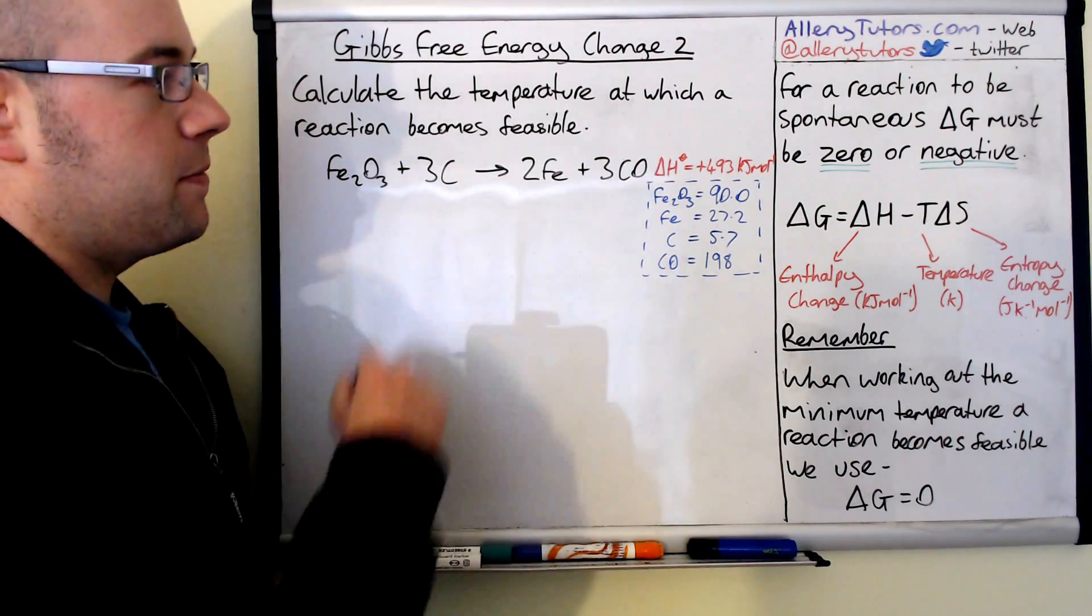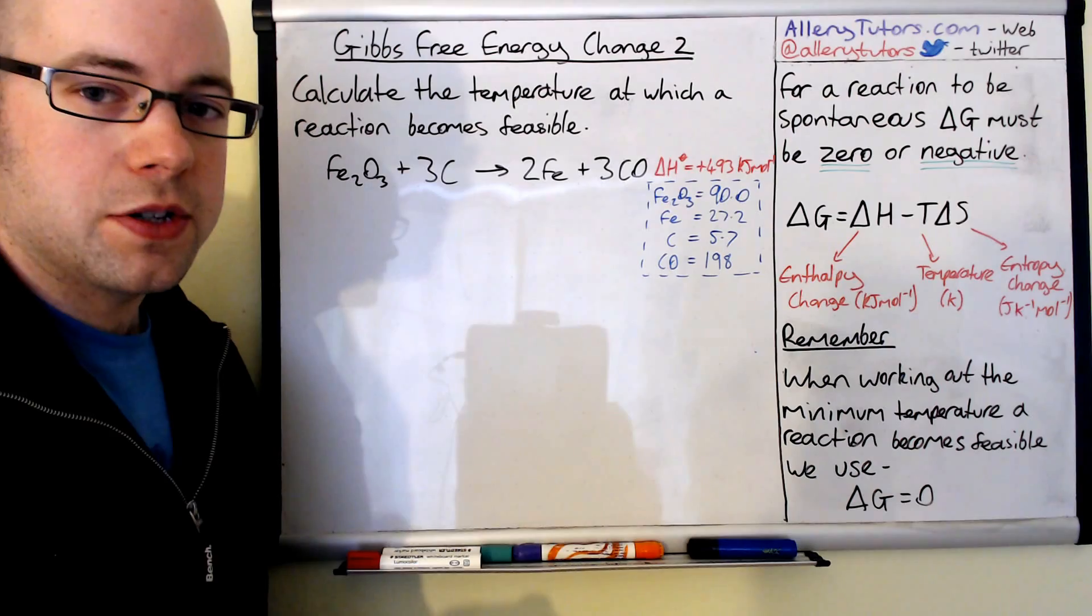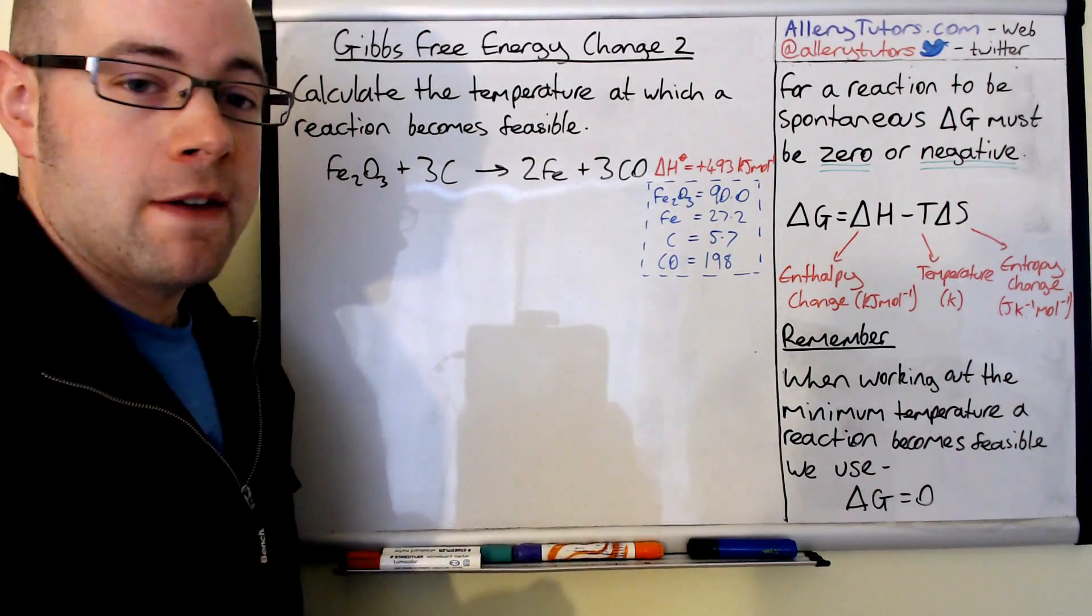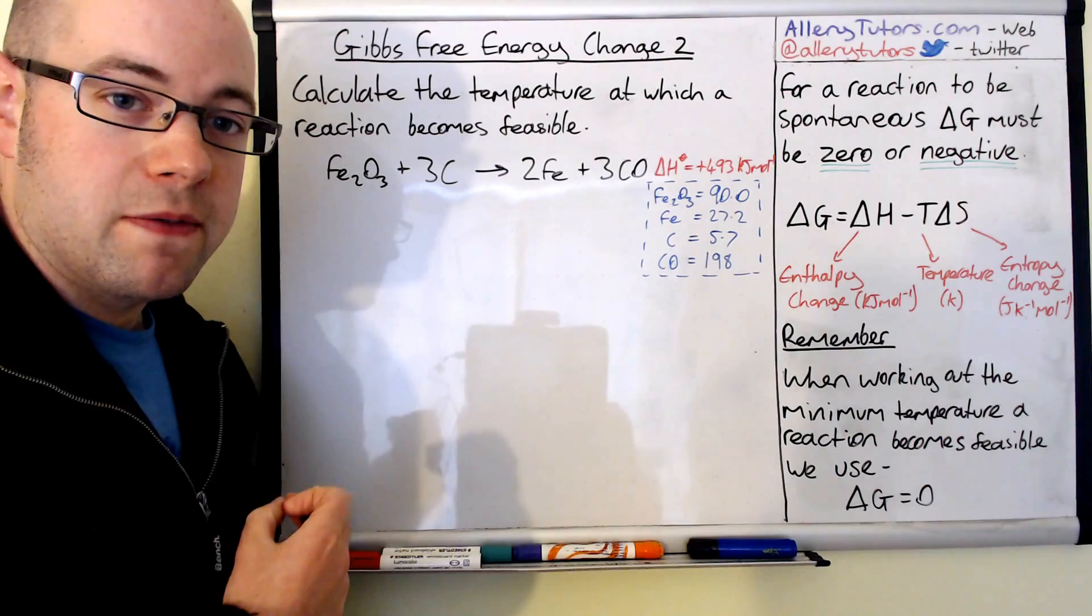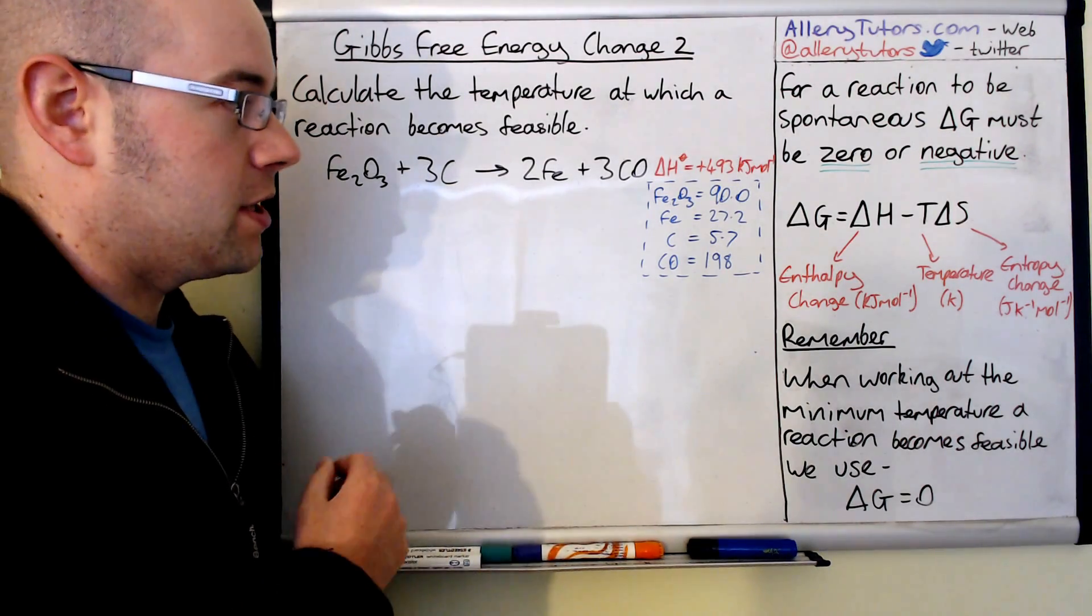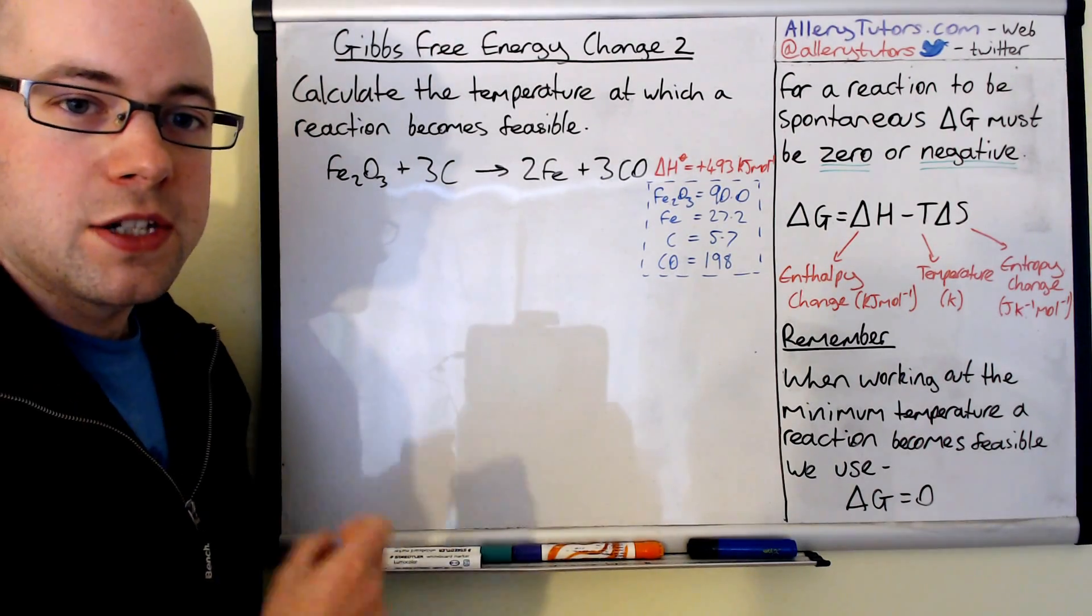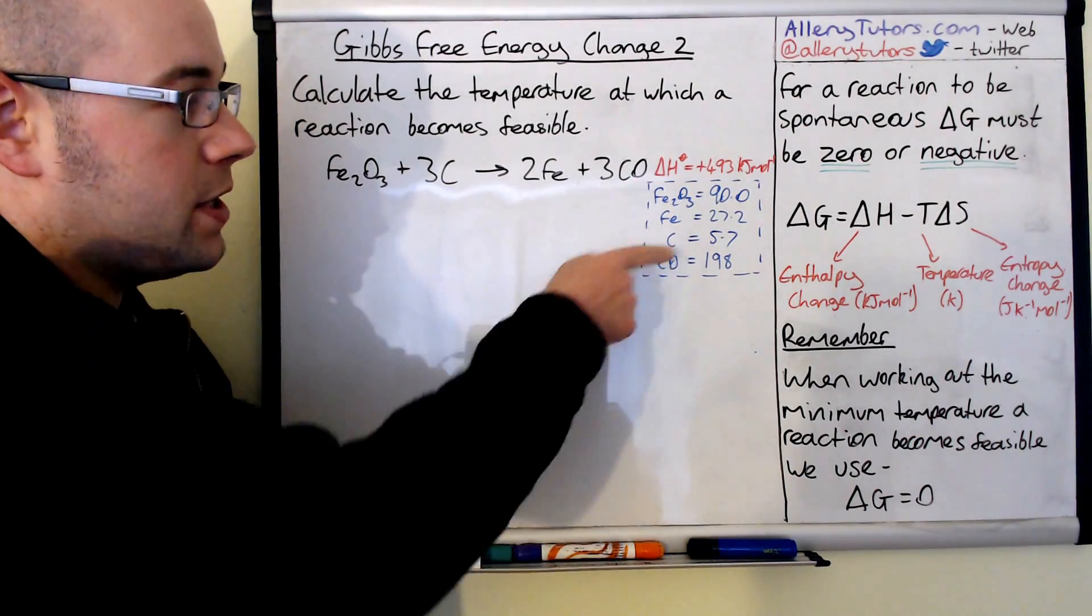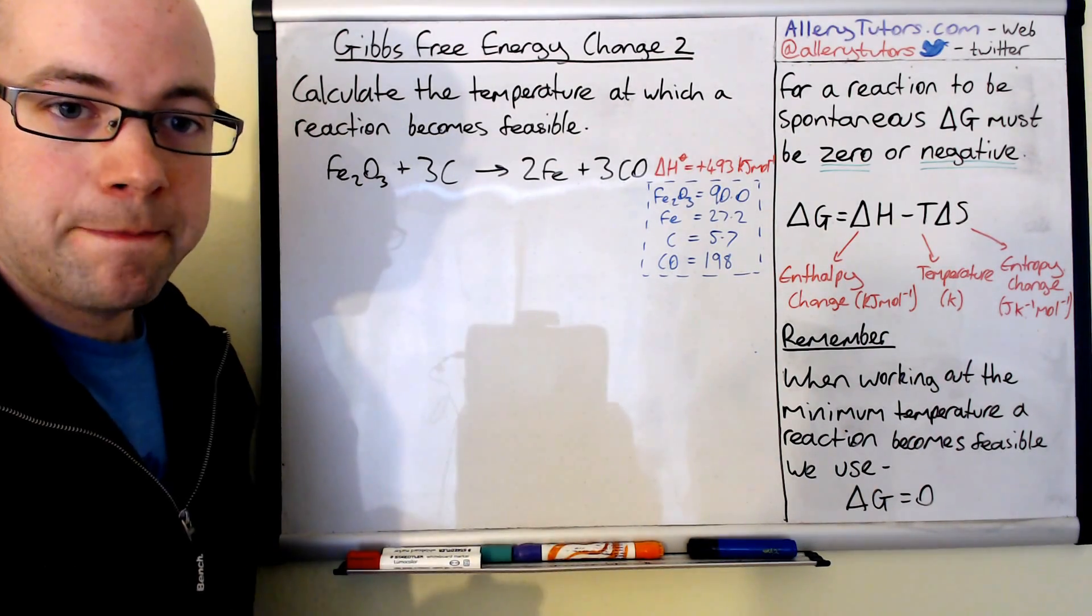We've got the enthalpy value here. The enthalpy value is endothermic, it's plus 493 kilojoules per mole. In the box there in blue, we've actually got entropy values. These are entropy values of iron oxide, which is 90. Iron is 27.2, carbon is 5.7, and carbon dioxide is 198. All of these are in joules per Kelvin per mole. This is the units of entropy.